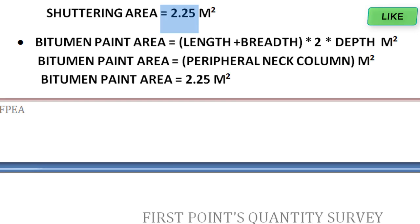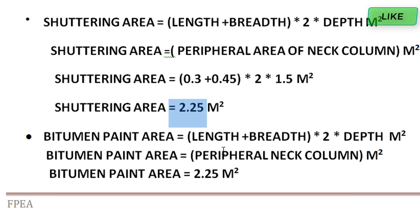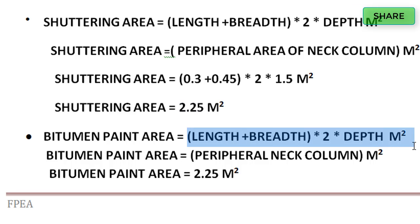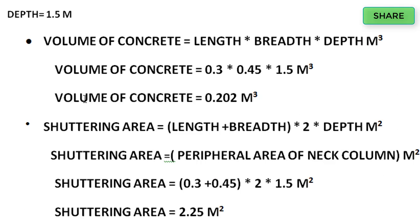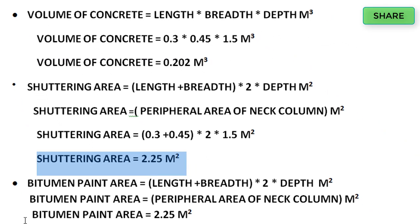The formula for shuttering area is length plus breadth, into 2, into depth — this is the peripheral area of the neck column. For a floor column, the shuttering area formula is the same, but bitumen paint is only applied for the neck column, not the floor column. So the value will be the same as shuttering: 2.25 square meters.